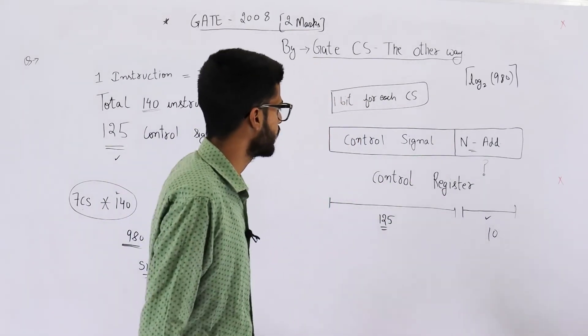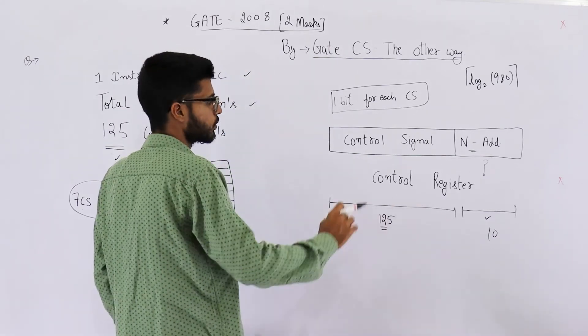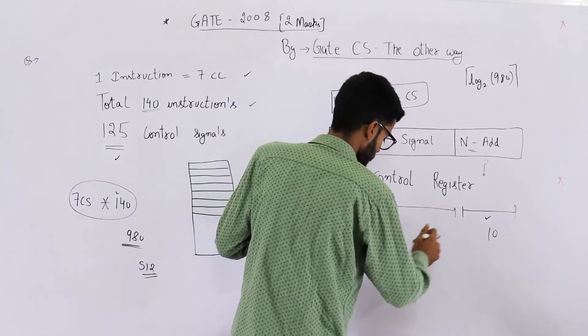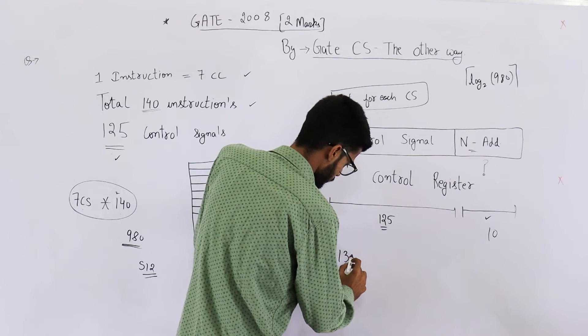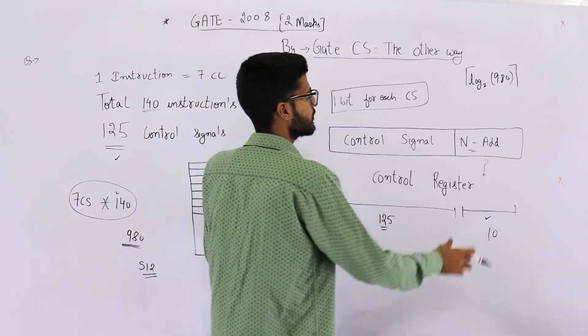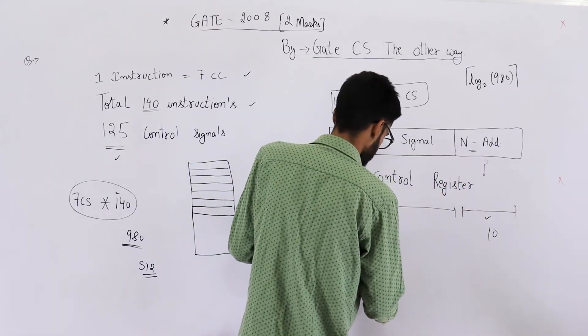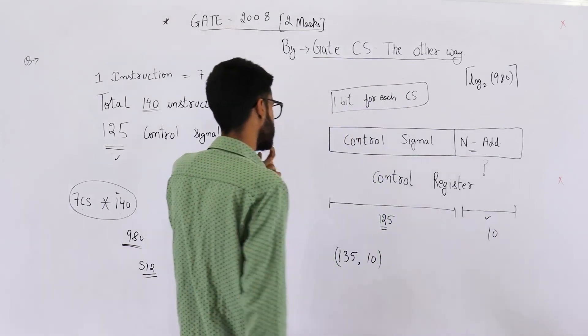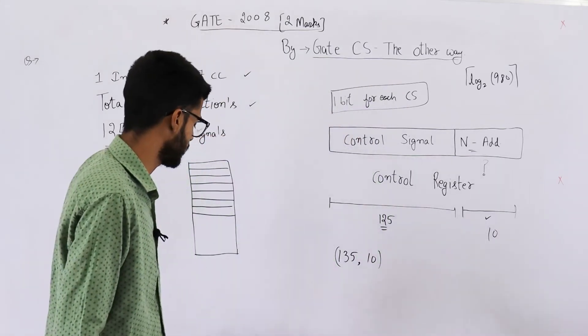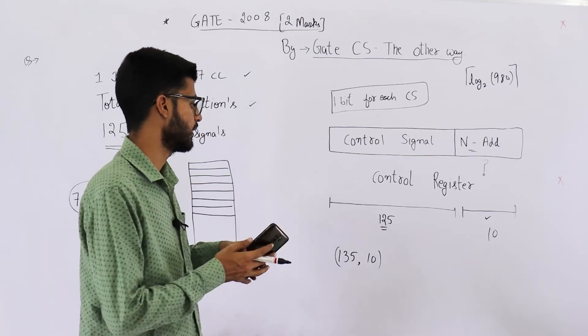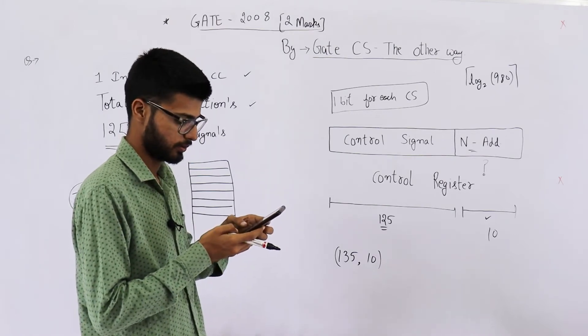So what is the length of the entire control word? It is 125 plus 10, that means 135, and the next address is 10 bits. So these are the two things that they are asking. So the answer is 135 comma 10 and it is option D.